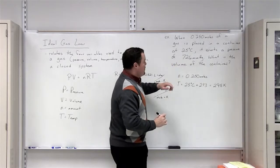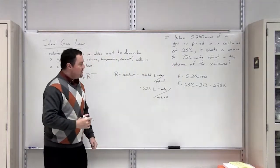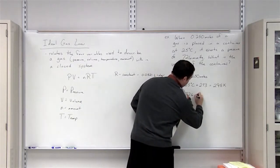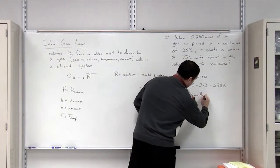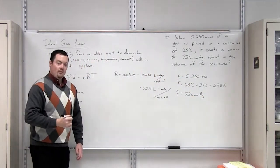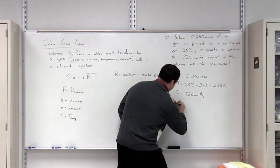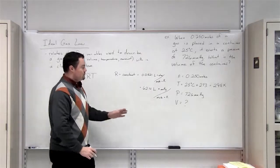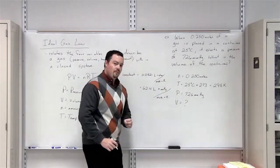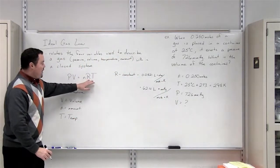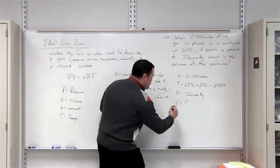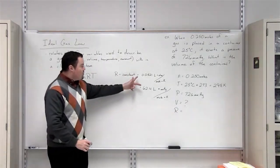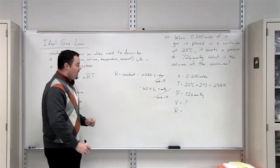The problem tells us that the pressure of this container is 726 millimeters of mercury. And it wants us to solve for volume. So here we've got four variables where we're given three of the four and asked to solve for volume. Now we come to the R value. Which R value do we pick to solve this problem?